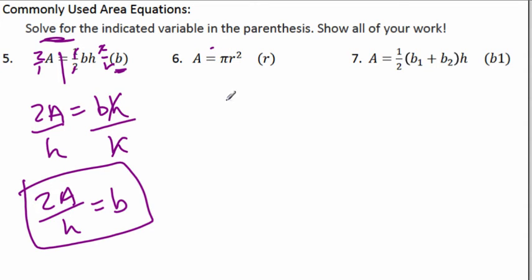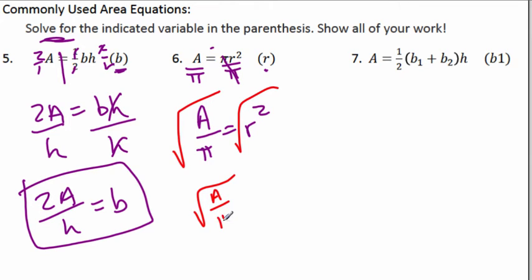Now this is multiplication. Base times height. What is the opposite? How do you undo multiplication? You divide. So we divide each side by H. Guess what? That's it. 2A over H is going to equal the base. And we're all done. Well, that's easy. Let's look at the next one. Area equals pi R squared.